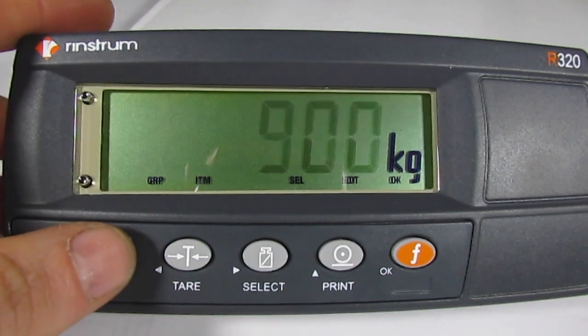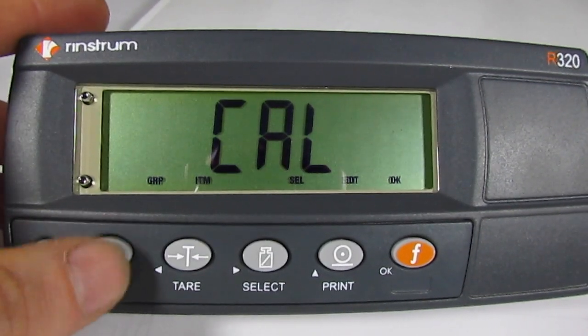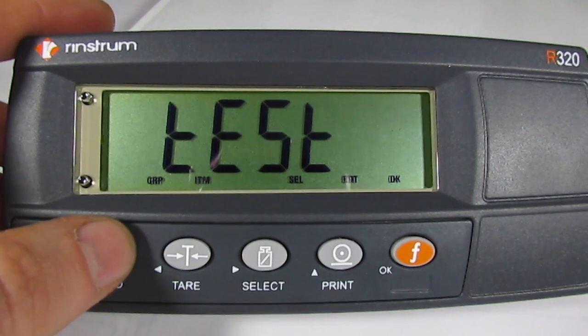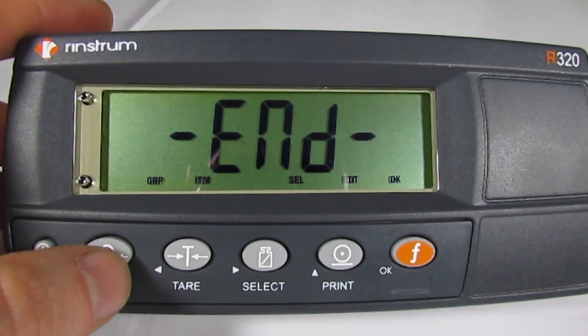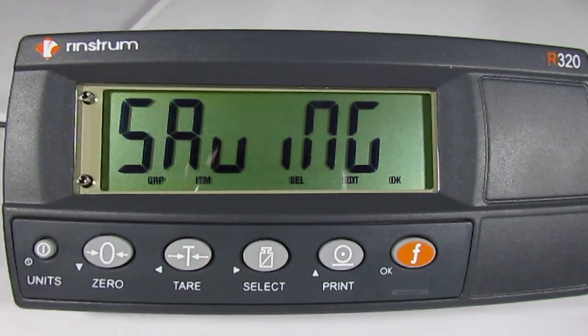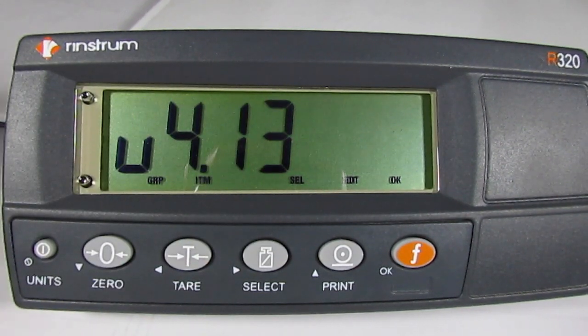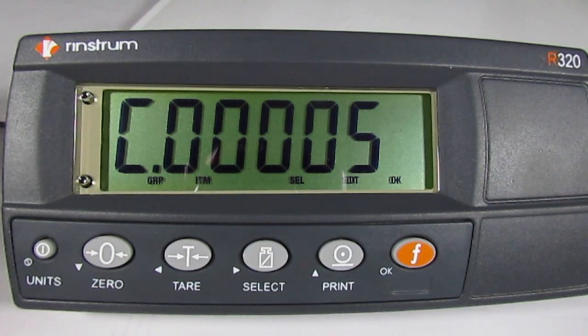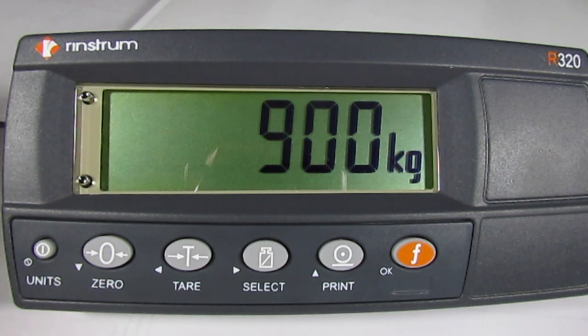To exit and go to the weigh mode, press the zero key briefly until it says end, and then press the tear key. It will say saving. It will show the firmware version and the firmware. And return to the weigh mode.